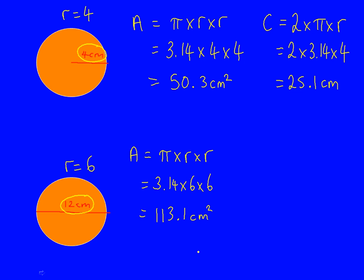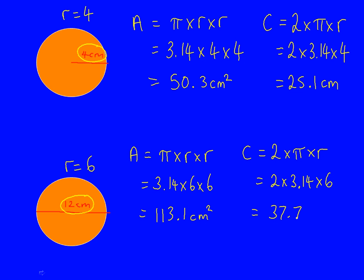Same again with circumference — always start with the formula that you need to learn: 2 times pi times r. Put in the numbers: 2 times 3.14 times the radius, which is 6. Type that into a calculator and you'll get the answer of 37.7, and the units are just centimetres because it's the distance around the circle.